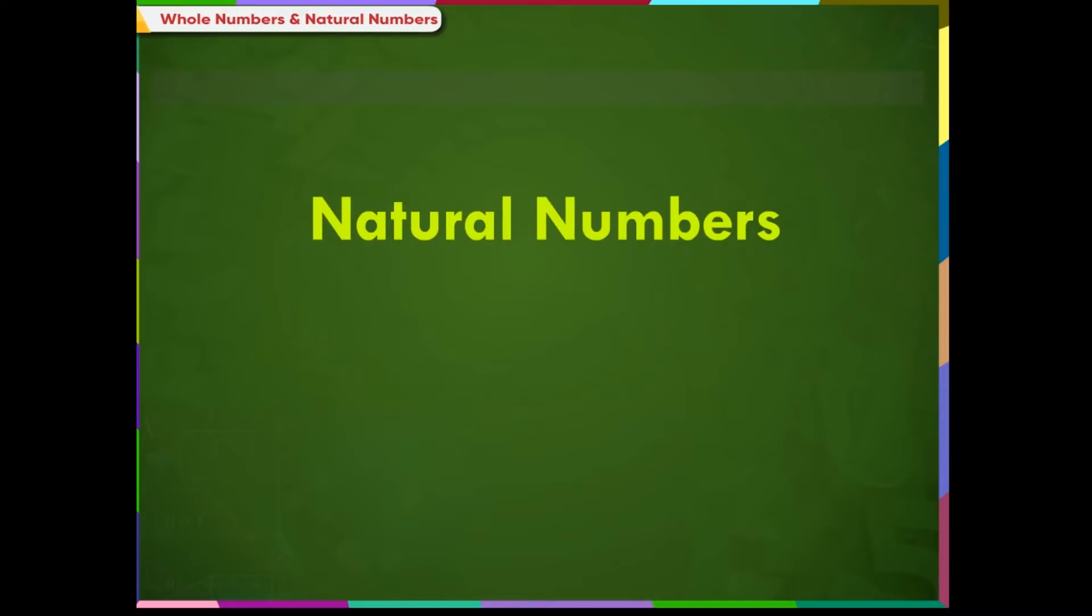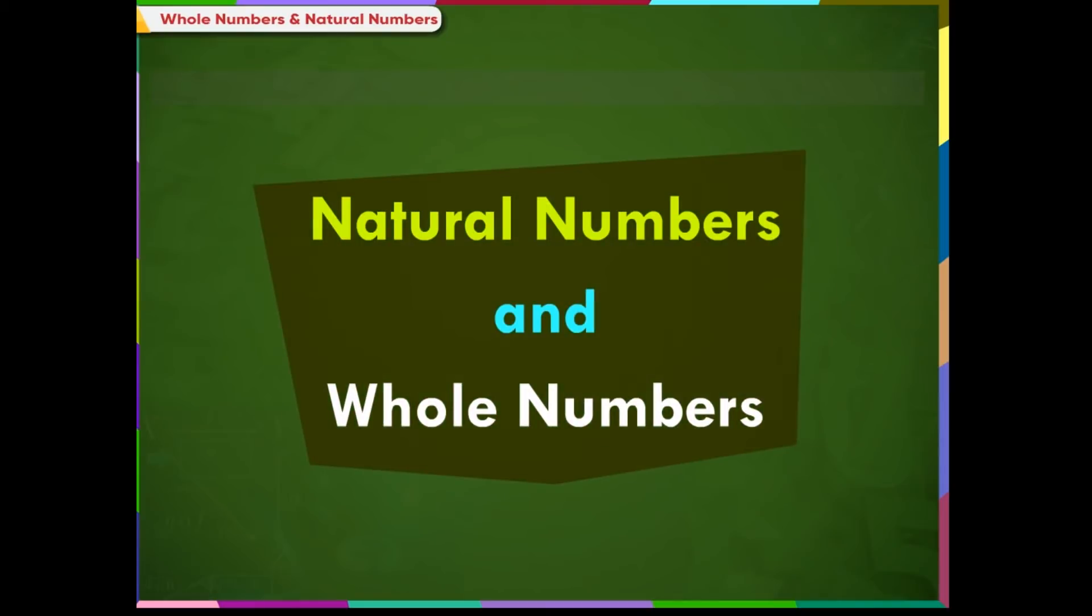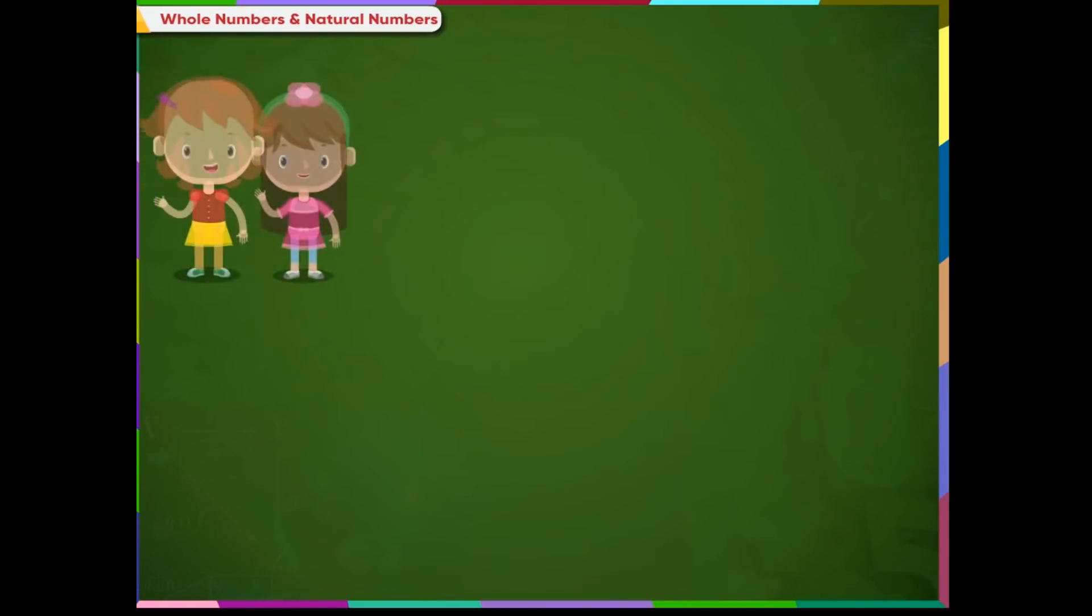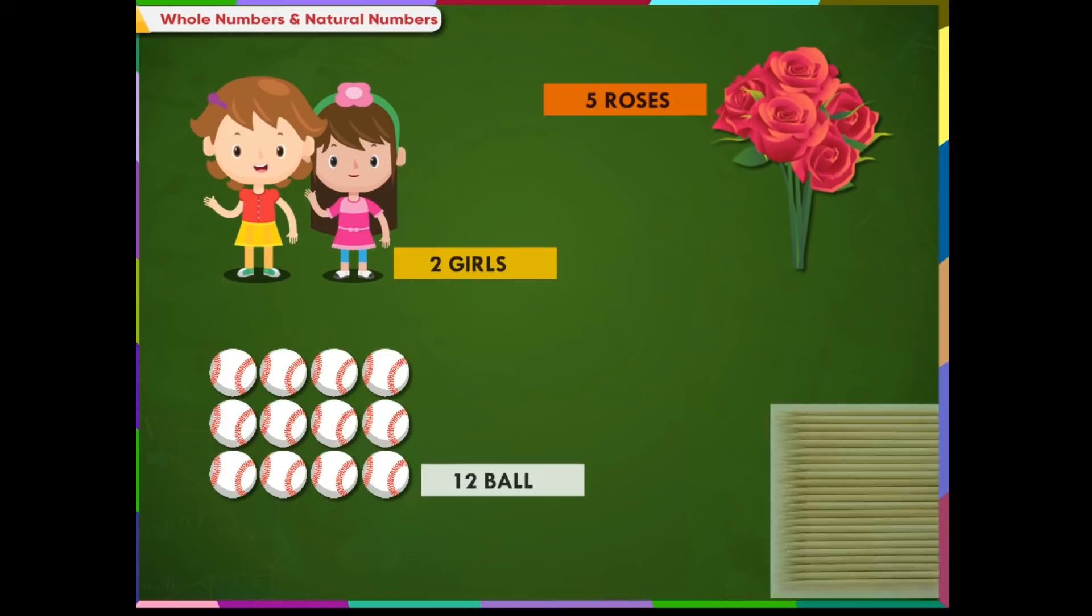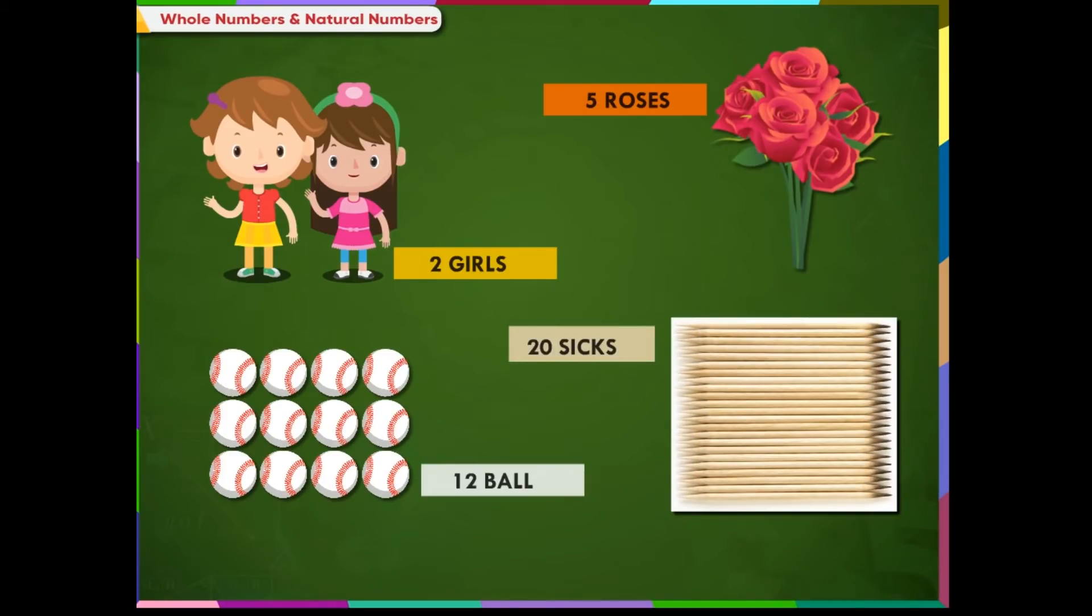We count objects using numbers like 2 girls, 5 roses, 12 balls and 20 sticks. We use numbers 1, 2, 3, 4 and so on to count objects. So, these numbers are called counting numbers or natural numbers.